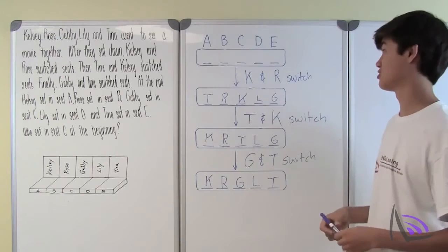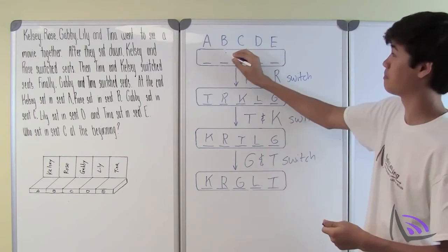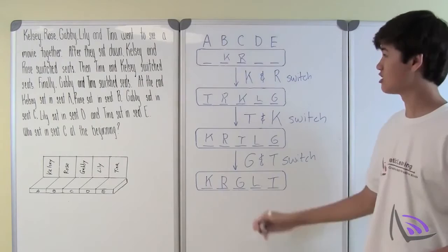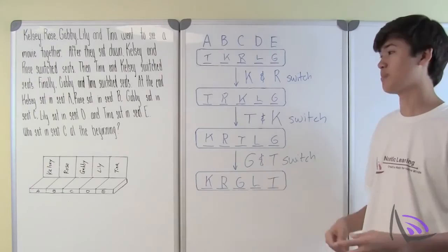Now the first switch: Kelsey and Rose switch. After the switch, Rose is in seat B and Kelsey is in seat C. Which means before the switch, Kelsey must have been in seat B and Rose in seat C. No one else changed, so Tina is still in seat A, Lily in seat D, and Gabby in seat E.